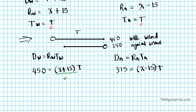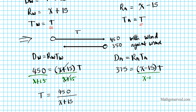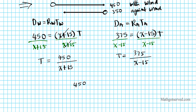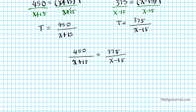On the left side, I divide both sides by (x + 15) to isolate t. That gives me t equals 450 divided by (x + 15). On the right side, I divide both sides by (x − 15) to isolate t. That gives me t equals 375 divided by (x − 15). Since time is equal in both cases, we can now set these proportions equal to each other: 450 over (x + 15) equals 375 over (x − 15).